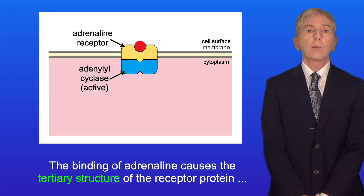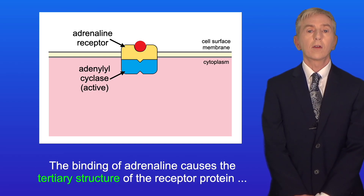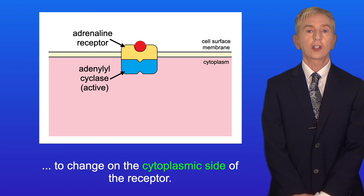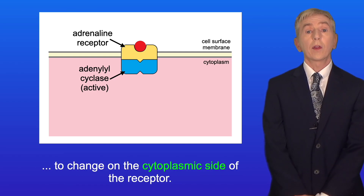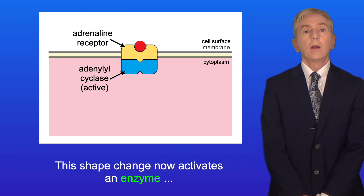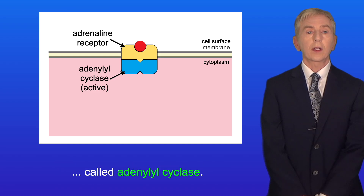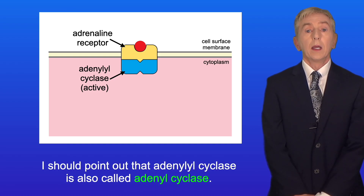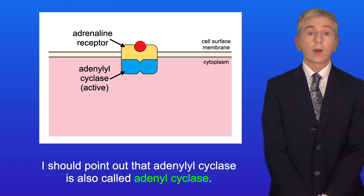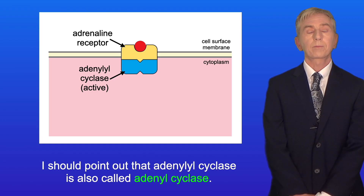The binding of adrenaline causes the tertiary structure of the receptor protein to change on the cytoplasmic side of the receptor. This shape change now activates an enzyme called adenylyl cyclase. I should point out that adenylyl cyclase is also called adenyl cyclase.